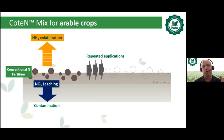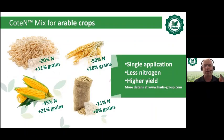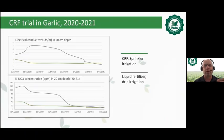With Cotton Mix, a single application means less nitrogen is applied overall. Results from different parts of the world, especially from Europe, show: in wheat, 50% less nitrogen with 30% more grains; in corn, 45% less nitrogen with 21% more yield. This is nutrient use efficiency, and it is achieved only with such an innovative product as Cotton Mix.